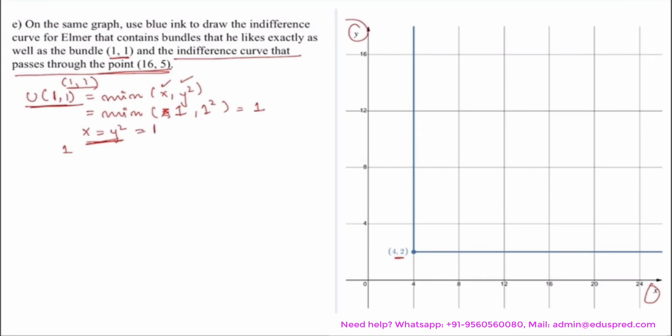If I solve this, I get x is equal to 1 and if I solve this, I get again y is equal to 1. The kink point now becomes (1,1).